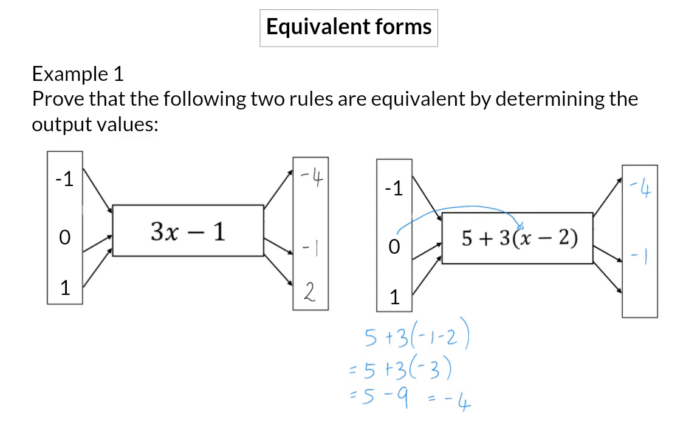The same goes for 1. In the bracket, I will have minus 1 times 3 is minus 3, and when I add 5, I will have a final value of 2. So, here we can see that both rules gave exactly the same output values for the given input values. So, we can say that these two rules are equivalent.